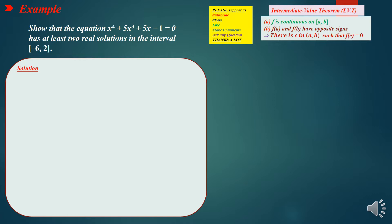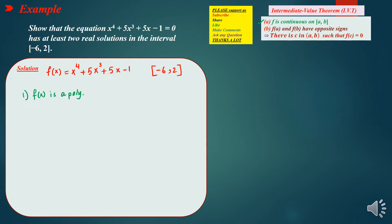You have to use the Intermediate Value Theorem (IVT). Here we have the function f of x equals x to the 4th plus 5x cubed plus 5x minus 1, on the interval from negative 6 to 2. The first condition to check is continuity. As you can see, f of x is a polynomial, which means it is continuous everywhere, so it will be continuous on the closed interval from negative 6 to 2.